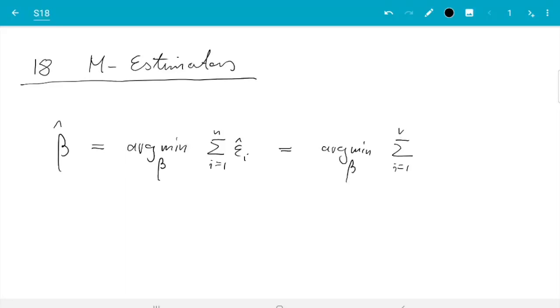Or alternatively we can expand that. So we have sum i from 1 to n and then we have yi minus beta 0 minus beta 1 xi1 up to beta p xip squared. So that's the residual sum of squares.